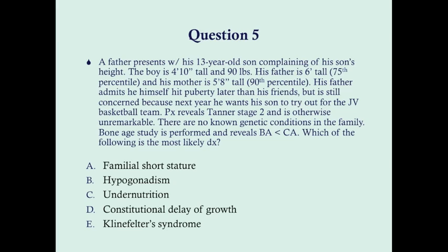The answer is D, constitutional delay of growth. This child is shorter than expected based on his parents' heights — we'd expect him to track between the 75th and 90th percentile, closer to his dad. He probably will reach that point, but hasn't hit his growth spurt yet. We need to look at the overall presentation to rule out more concerning diagnoses. He's height-weight proportionate at 4'10" and 90 pounds, so we can rule out undernutrition — if he were 4'10" and 65 pounds we'd be concerned about inadequate caloric intake.